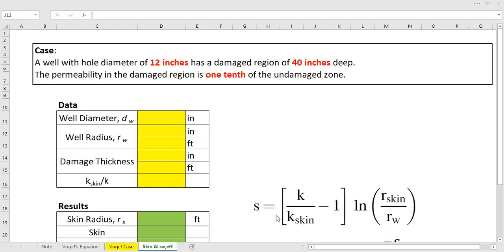All right, so we have our case right here. Let's read it together. We have a well with hole diameter of 12 inches, and this well has a damaged region of 40 inches deep. And the permeability in the damaged region is one-tenth of the undamaged zone. So we need to calculate the skin factor of this damaged well as well as the effective wellbore radius caused by the skin factor.